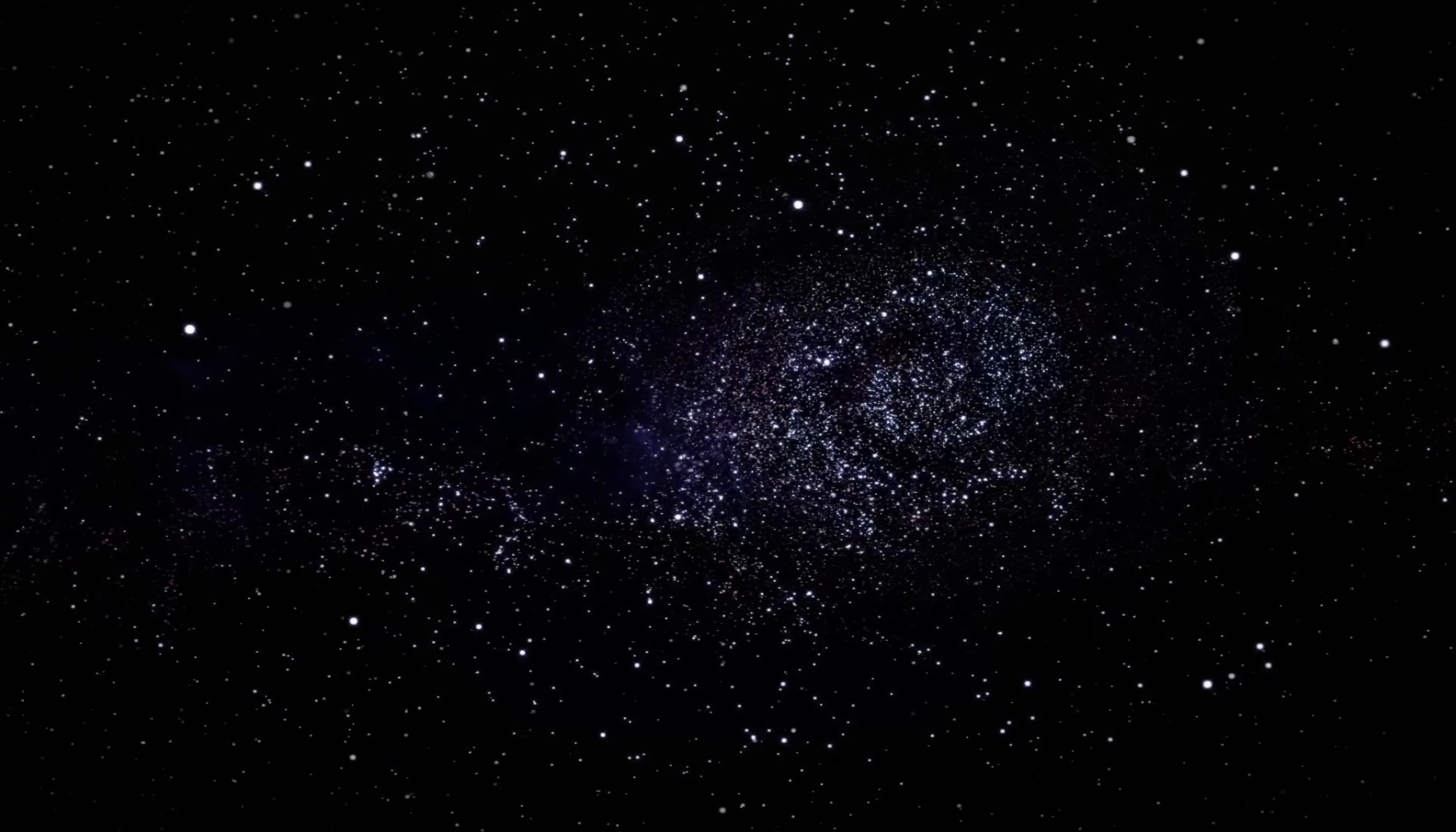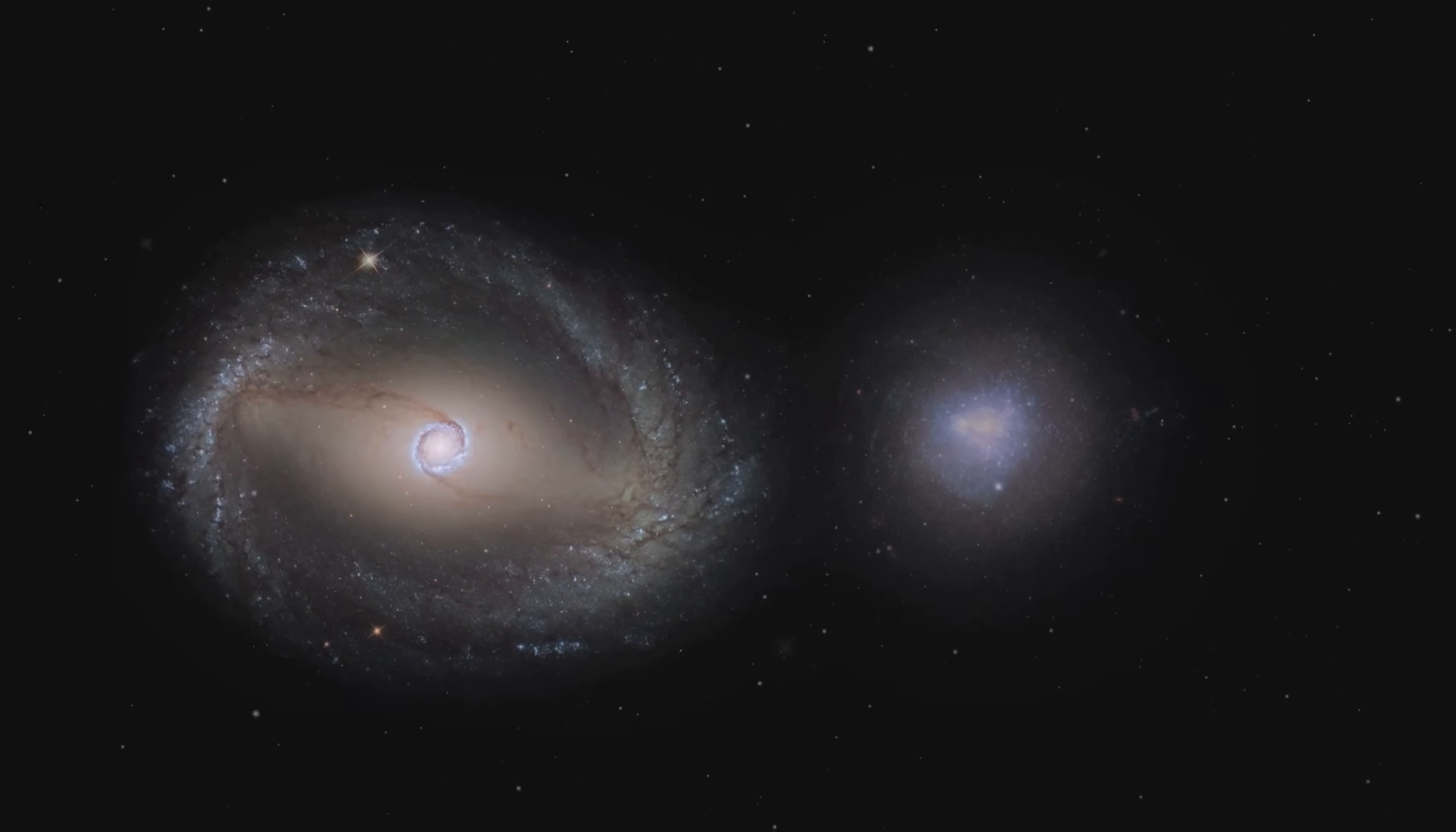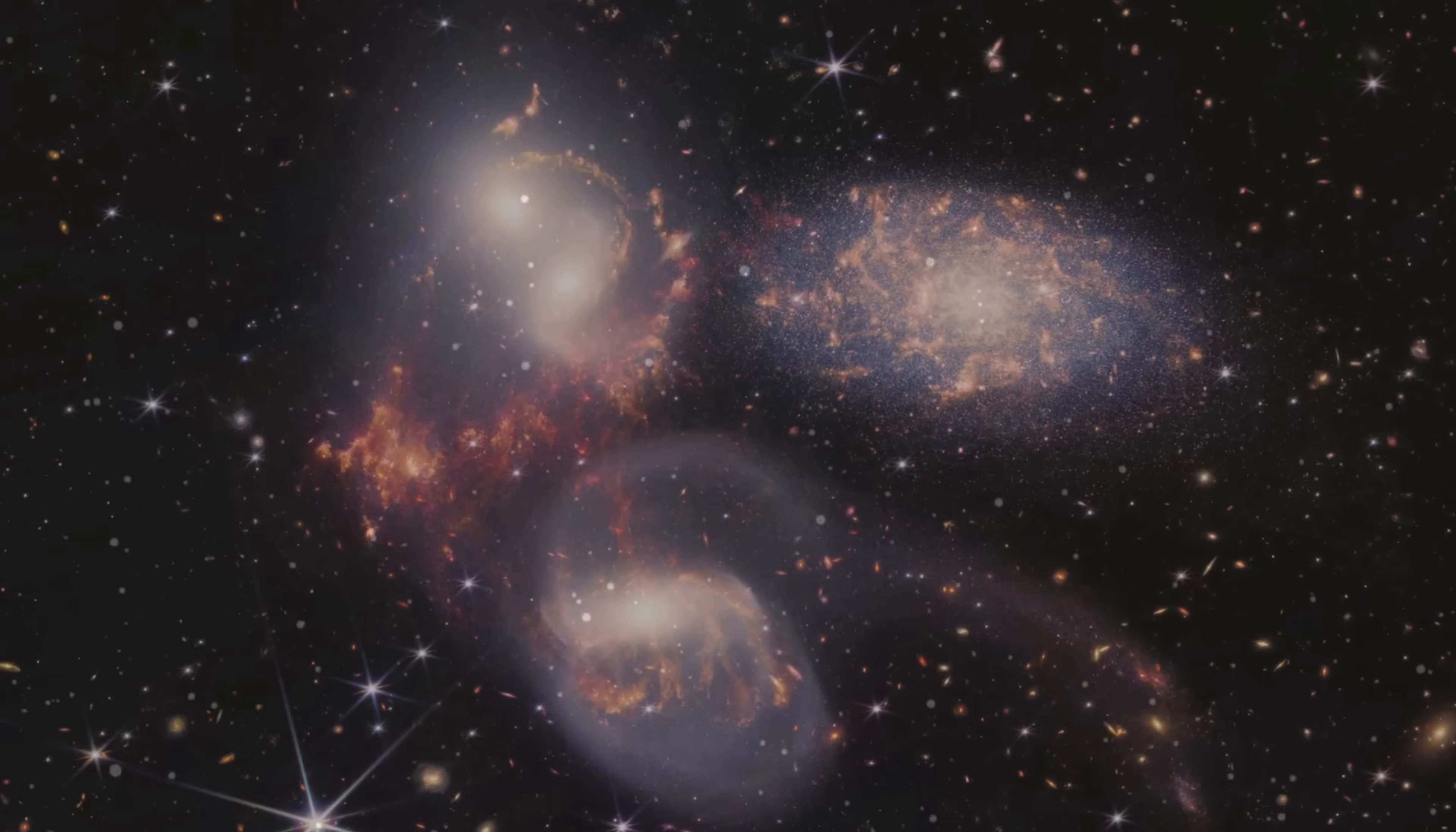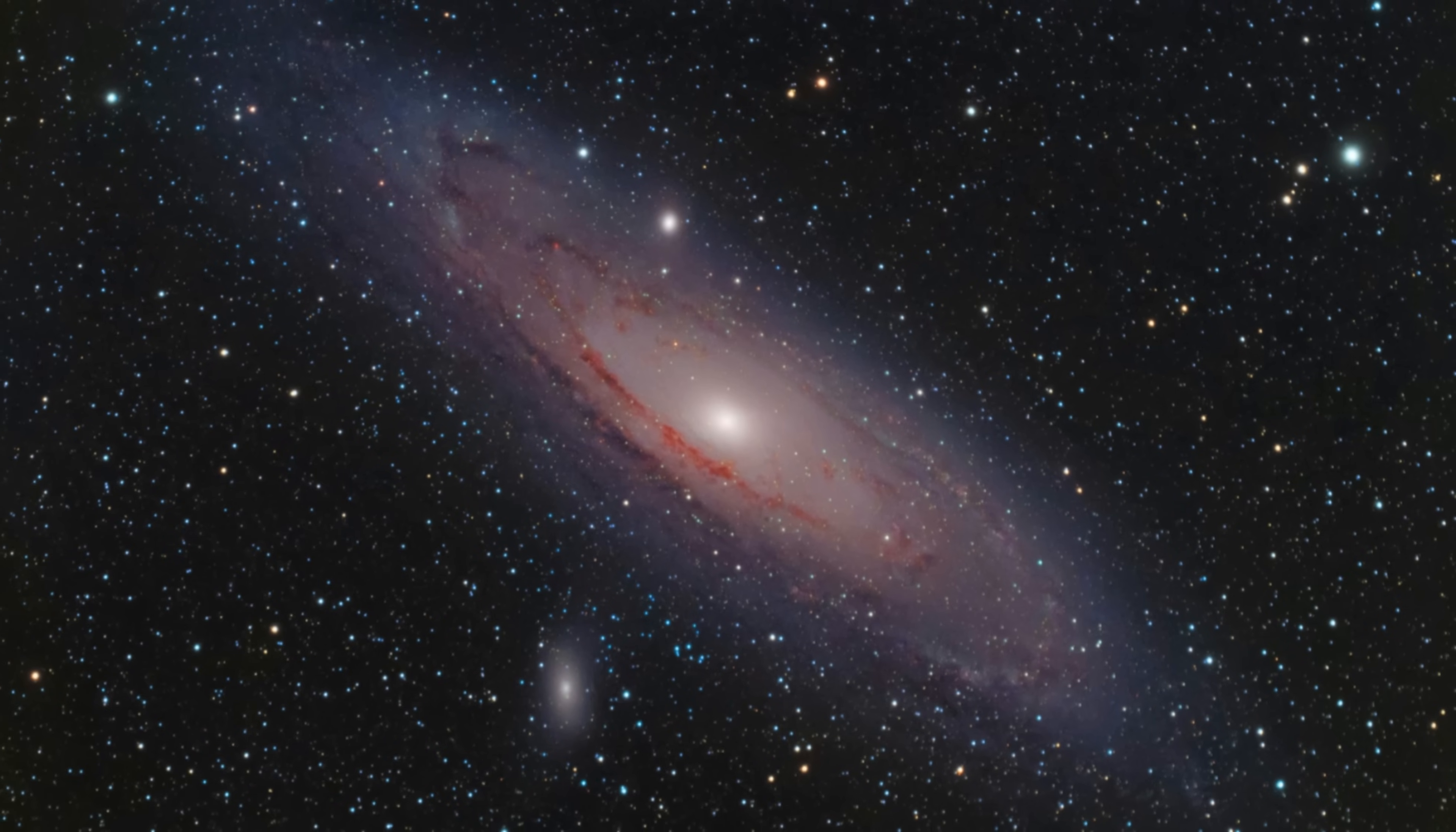Irregular galaxies are the misfits of the galaxy world. They have no defined shape or structure. Irregular galaxies often form when two galaxies collide or interact closely. The collision can distort the shapes of the galaxies, creating a chaotic mix of stars, gas, and dust. Irregular galaxies are often rich in star-forming regions. The Large and Small Magellanic Clouds visible in the southern hemisphere are examples of irregular galaxies.